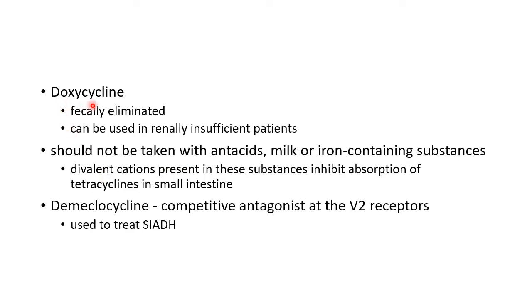Doxycycline, which belongs to the tetracycline family, is fecally eliminated, so it can be used in renally insufficient patients. Tetracycline and drugs belonging to the tetracycline family should not be taken along with antacids, milk, or iron-containing substances, because divalent cations present in these substances inhibit absorption of tetracycline in the small intestine. Demeclocycline is a competitive antagonist at the V2 receptors, so it can be used to treat syndrome of inappropriate ADH secretion.